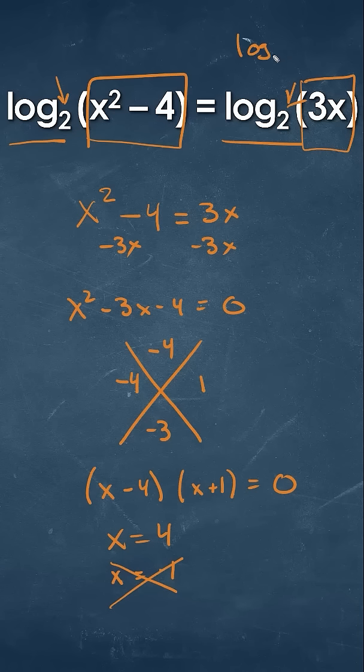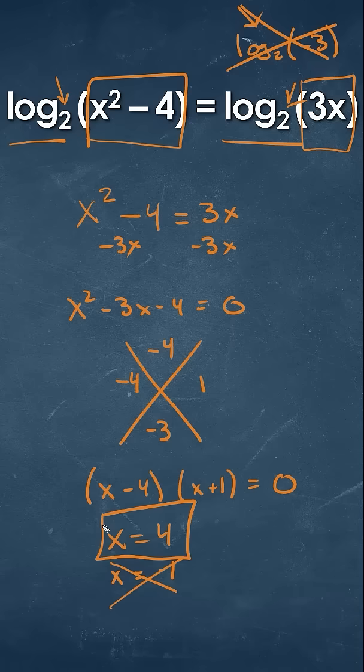The reason why is that if we take a log of any value that's going to be negative would be undefined. So therefore we cannot use that. The only answer we would get is going to be x is equal to 4.